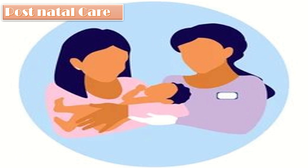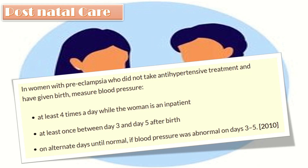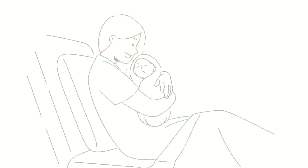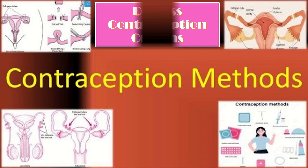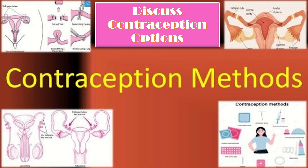After birth, provide appropriate postnatal care. In women with preeclampsia who did not receive antihypertensive treatment, check blood pressure at least four times a day while inpatient, then at least between day three and five on alternative days until normal. Check urine albumin at 12 weeks orally and inquire about symptoms of imminent eclampsia. If the patient is on methyldopa, change to calcium channel blockers within two days.